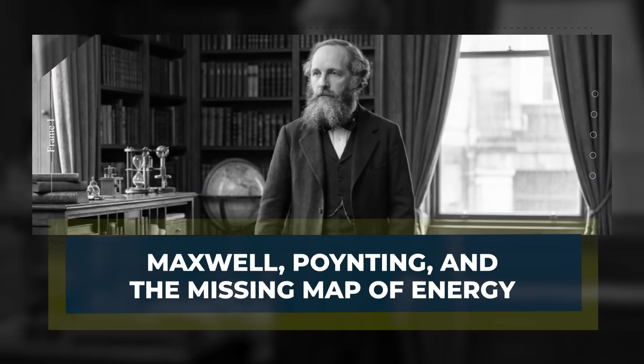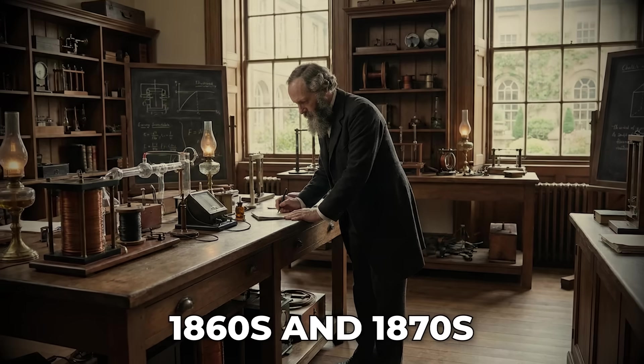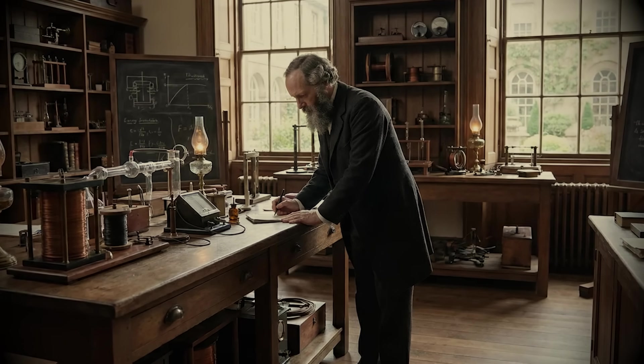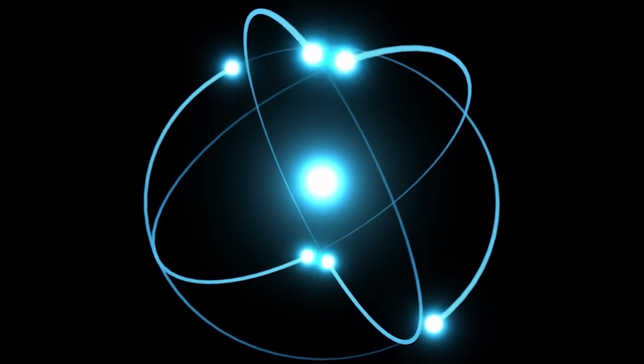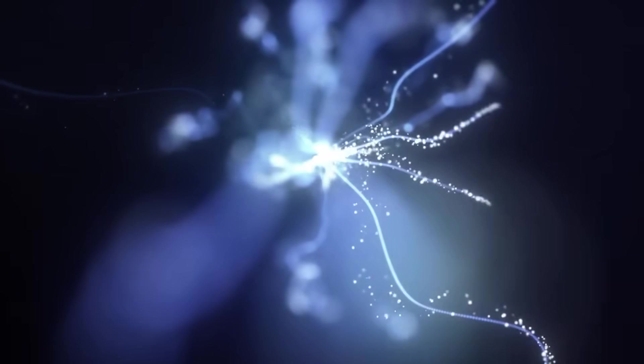Maxwell, Poynting, and the Missing Map of Energy. In the 1860s and 1870s, James Clerk Maxwell pulled together a set of ideas that had been separate. He showed that changing electric fields and changing magnetic fields are tied together, and that this tie produces waves. Light is one of those waves.